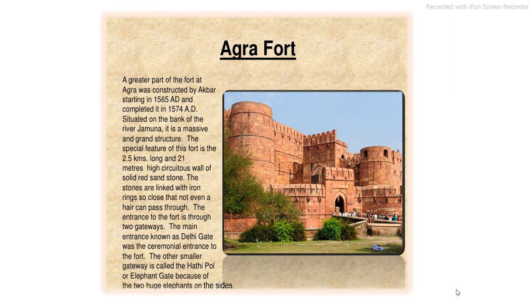This is the Agra Fort. A greater part of the fort at Agra was constructed by Akbar starting in 1565 and completed in 1574. Situated on the bank of the river Yamuna, it is a massive and grand structure. The special feature of this fort is the 2.5 kilometers long and 21 meters high circuitous wall of solid red sandstone. The stones are linked with iron rings so close that not even a hair can pass through. The entrance to the Agra Fort is through two gateways: the main entrance known as the Delhi Gate, and the smaller Hathi Pol or Elephant Gate, named because of the two huge elephants on its sides.